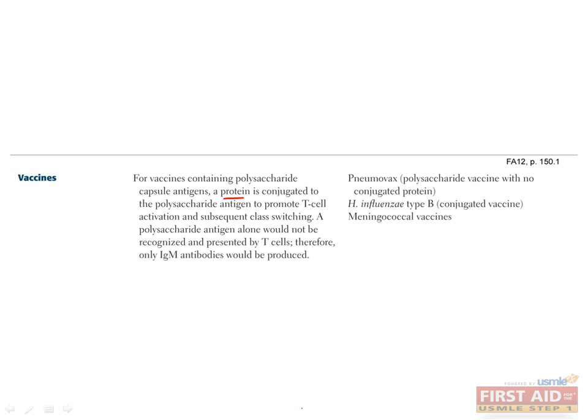When it comes to encapsulated bacteria that have polysaccharide antigens, the polysaccharide antigen is poorly immunogenic. Therefore, conjugating or linking the polysaccharide antigen to a protein antigen tricks the immune system into recognizing the antigen and forming antibodies against the polysaccharide.